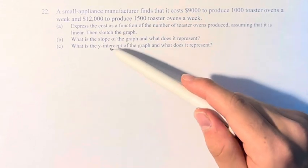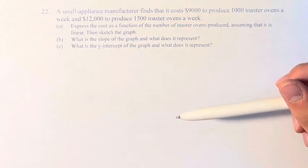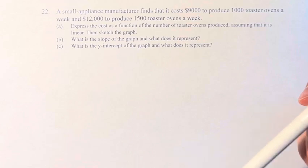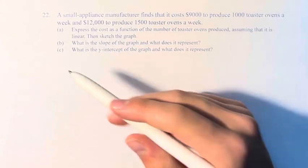So we're asked to express the cost as a function of the number of toaster ovens produced, assuming that it is linear, and to sketch the graph. To find the function, it's the function of a line since we're assuming it's linear.